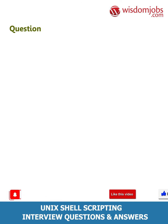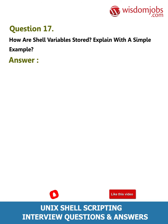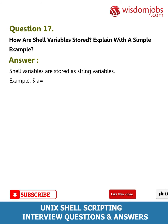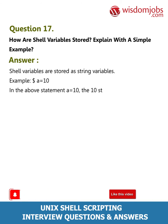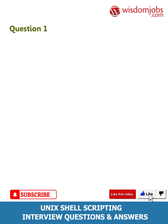Question 17: How are shell variables stored? Explain with a simple example. Answer: Shell variables are stored as string variables. Example: a=10 — in the above statement, the value 10 stored in 'a' is not treated as a number but as a string of characters '1' and '0'.